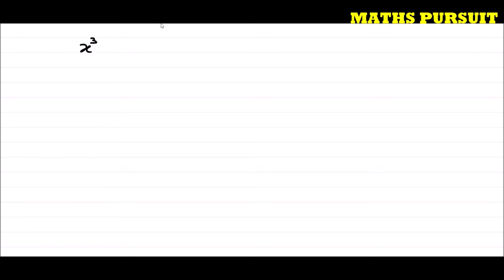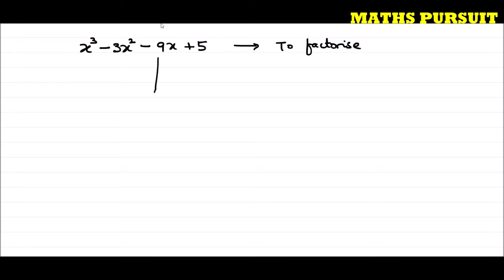The question has given us the polynomial x to the power 3 minus 3x to the power 2 minus 9x plus 5, and is asking us to factorize. Now, looking at this polynomial, anyone can tell two things.